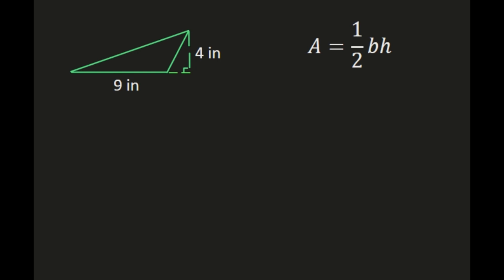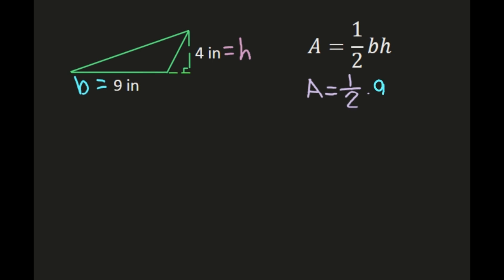This next example has an obtuse triangle. The important thing to note is they give us our base of 9 inches. But look where they've drawn the height — outside of the triangle — because the height goes from the vertex opposite your base, perpendicular to the base. That is this dashed line drawn outside of the triangle, and our height is 4 inches. So we're ready for our formula: area equals one-half times our base of 9 times our height of 4.